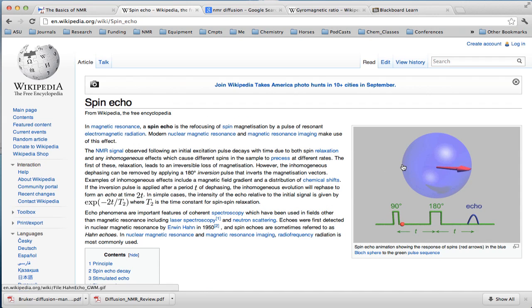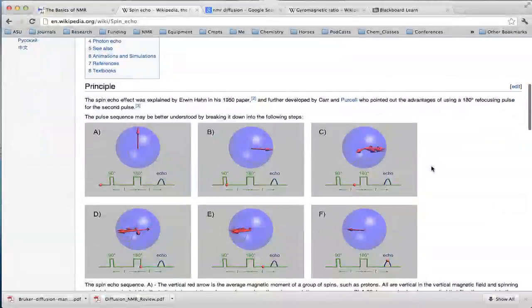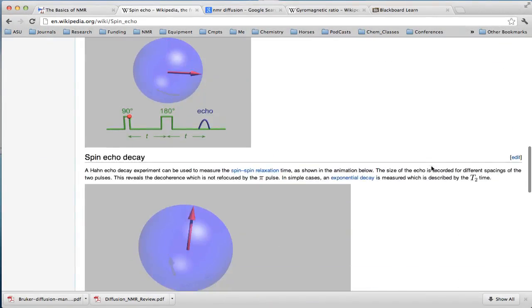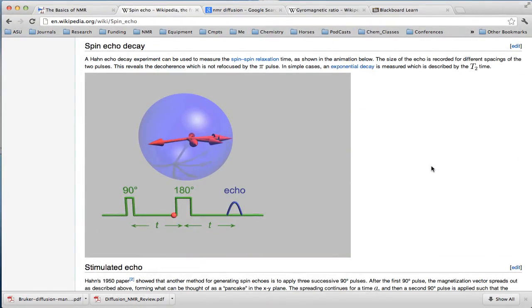If you do a simple Google search on spin echo, one of the first things that come up is the wiki page, and again this gives a very nice example here of showing the dephasing, showing how 180 refocuses that, and how the echo can be used. And down below it even shows you as you increase the echo time, how this exponentially decays.